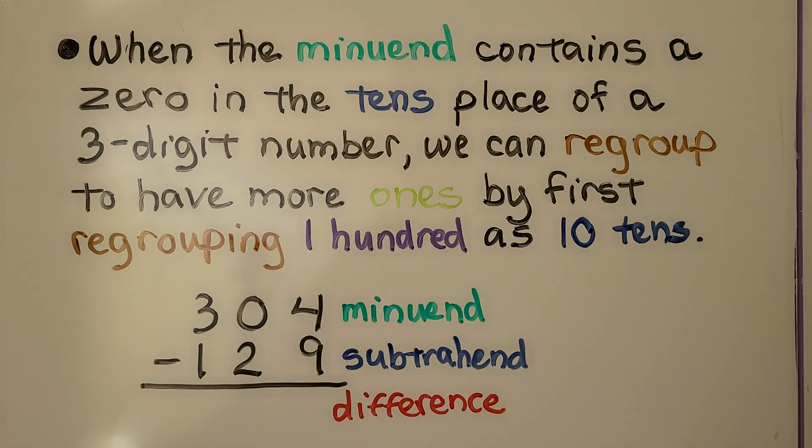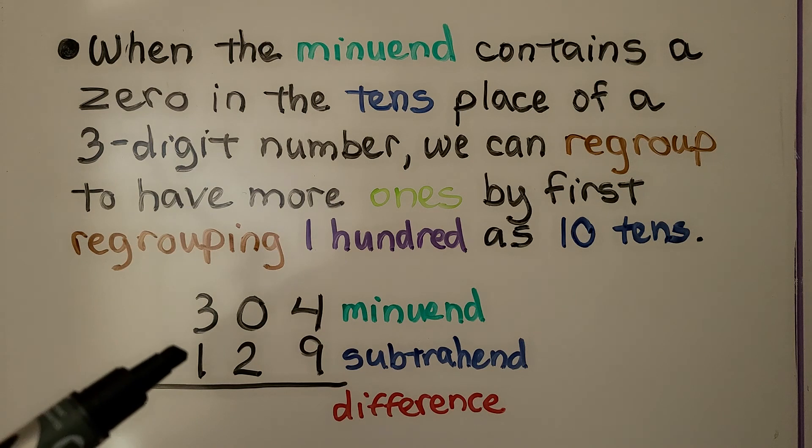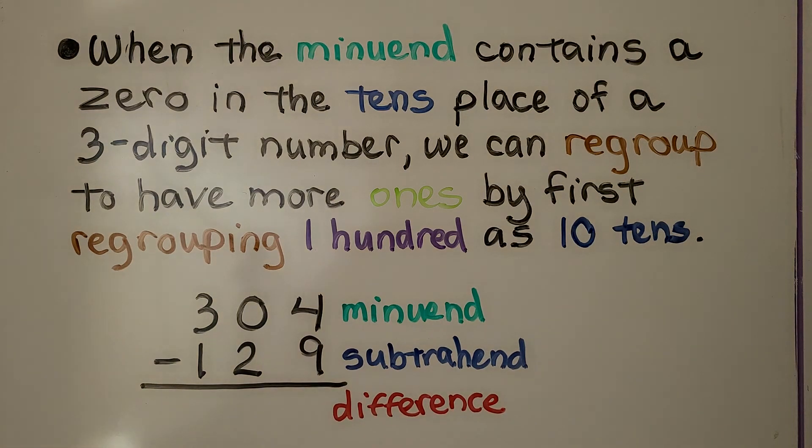When the minuend contains a zero in the tens place of a three-digit number, we can regroup to have more ones by first regrouping 100 as ten tens. Remember, the top number is the minuend, we're taking away the subtrahend, and the answer is the difference.